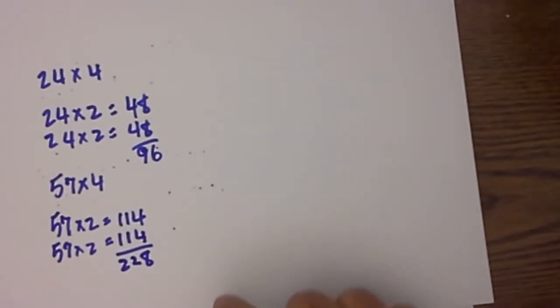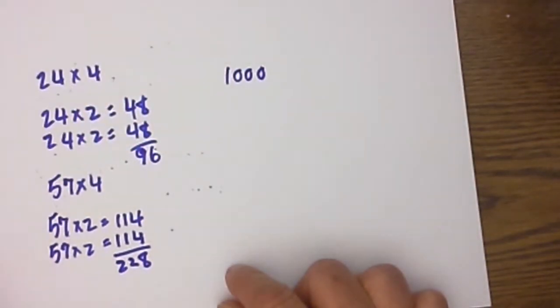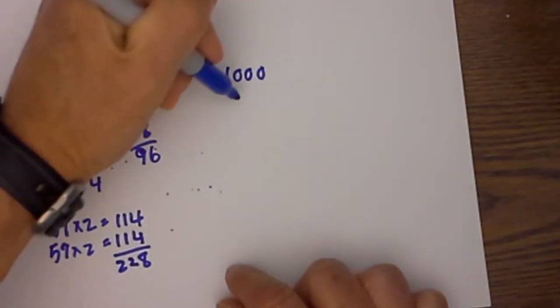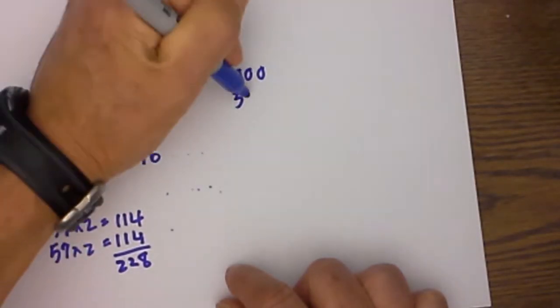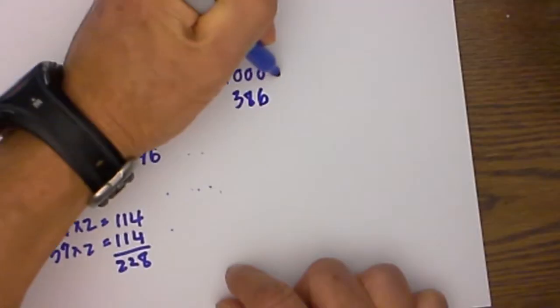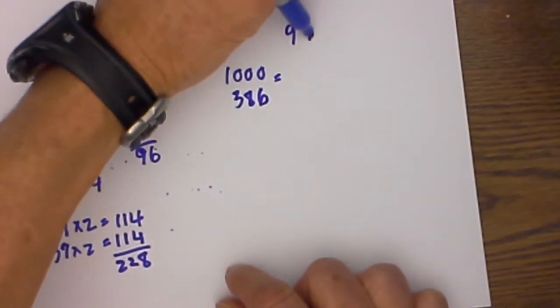Finally, this last trick is just kind of fun. I know it is easy when you have 1000 to subtract a number, but I think this is kind of fun. Let's say we have 1000 minus 386. Basically what you do: you remember 9, 9, 10.